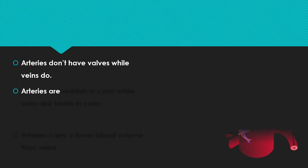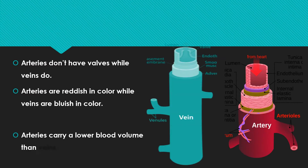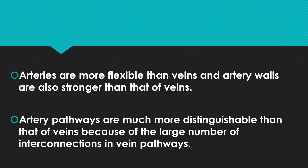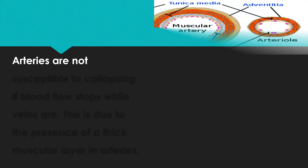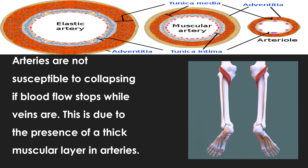Arteries don't have valves while veins do. Arteries are reddish in color while veins are bluish in color. Arteries carry a lower blood volume than veins. Arteries are more flexible than veins and artery walls are also stronger than those of veins. Artery pathways are much more distinguishable than those of veins because of the large number of interconnections in vein pathways.